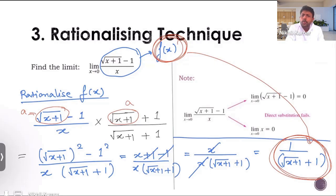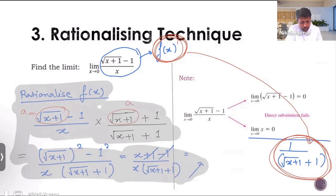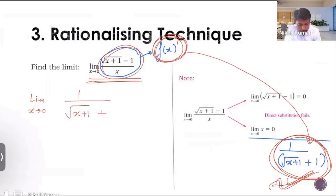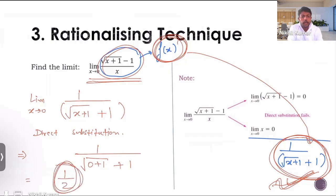Now, we have to put the limit. What we have done till now is we have simplified this f of x into something where we can use direct substitution. This question can now be written as limit x tending to 0, 1 upon root x plus 1 plus 1. Now, you use direct substitution. We get 1 upon root 0 plus 1 plus 1, that's under root plus 1. This is 1 upon 2. So the limit is 1 upon 2.